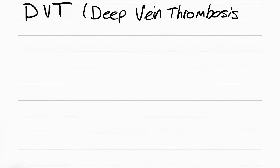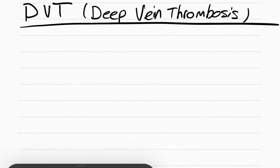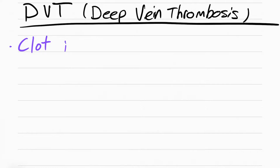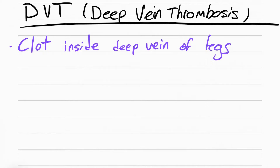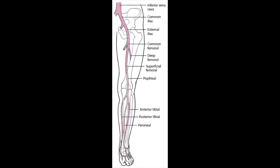A DVT is when you have a clot stuck in the deep veins of the leg. The most common veins affected are the iliac, the femoral, and the popliteal veins.